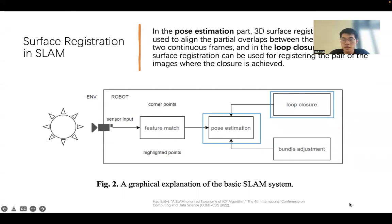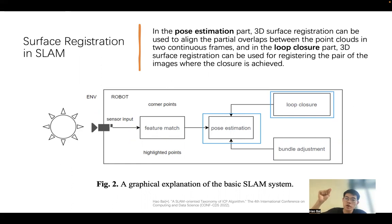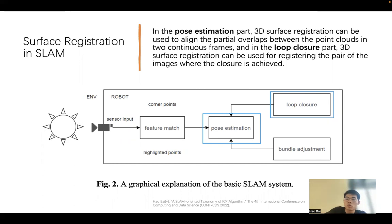Surface registration in SLAM is divided into four steps: feature matching, pose estimation, and two other steps contributing to pose estimation. The loop closure and pose estimation parts use the ICP algorithm. Pose estimation is when you move from one point to another, and there may be some overlapping sensor readings between the two positions. We want to use this overlap for surface registration.